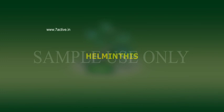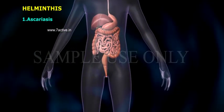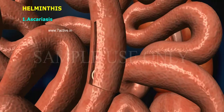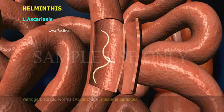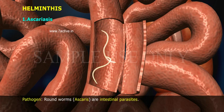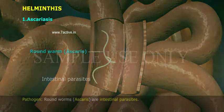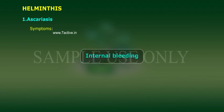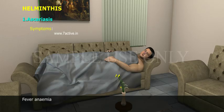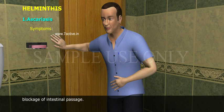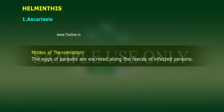Helminthes. 1. Ascariasis. Pathogen: roundworms, Ascaris, are intestinal parasites. Symptoms include internal bleeding, muscular pain, anaemia, and blockage of the intestinal passage.